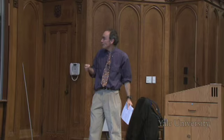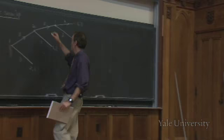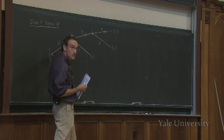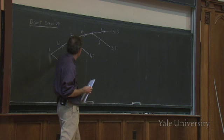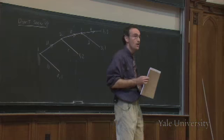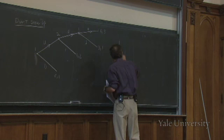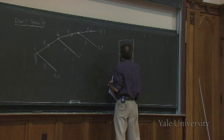Let's analyze this game using what we learned last time. The first thing to do is look at strategies. Player two has two strategies — left and right — because player two only has one information set. This game is actually a game of perfect information. Player one has two information sets, and at each she has two choices, so she must have four strategies in all. This game in matrix form is going to be a four-by-two game.